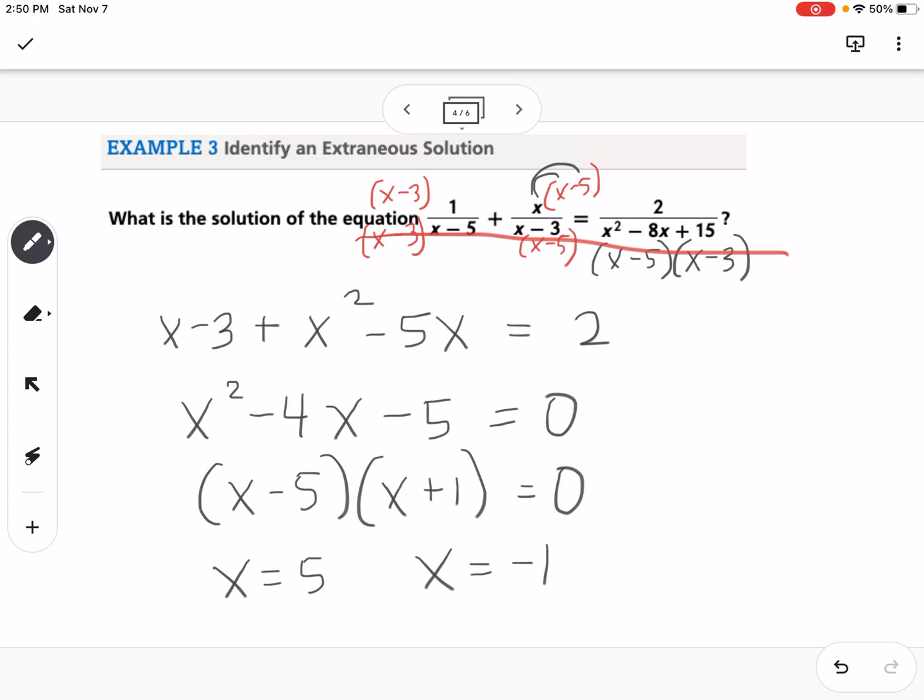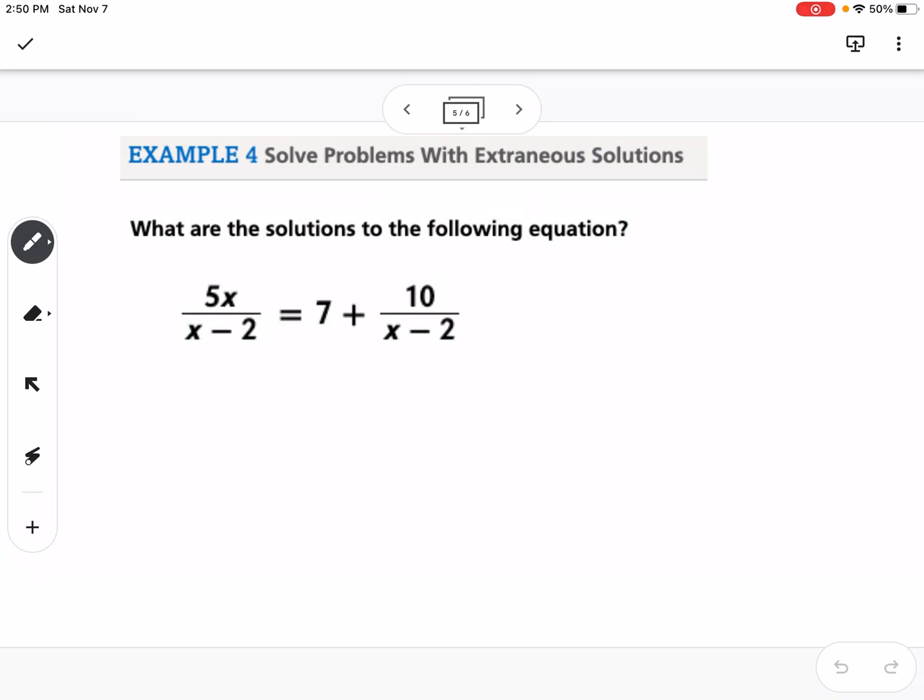This is where we introduce what's called an extraneous solution. So an extraneous solution is a solution that we get, like when we solve it all out, however, it doesn't work if I plug it back into my original equation. So if you look at the original equation, we know that x can't be 5 and x can't be 3, because that would cause us to divide by 0. So that means that 5 is extraneous, and so our only solution in this case is negative 1.